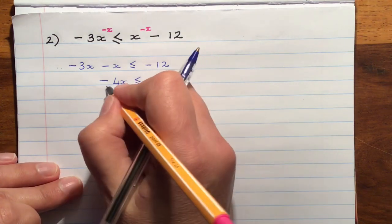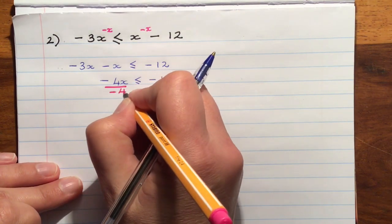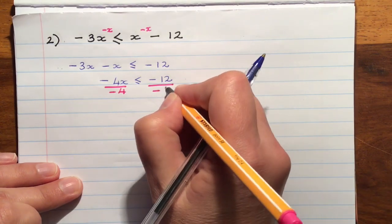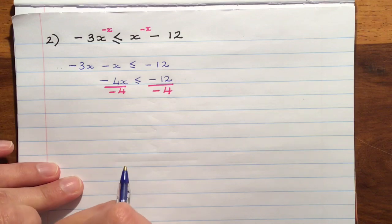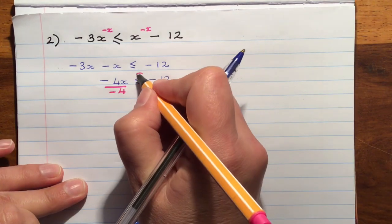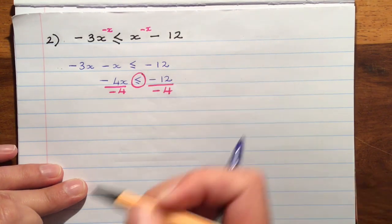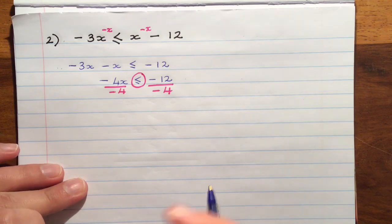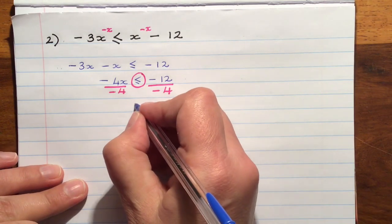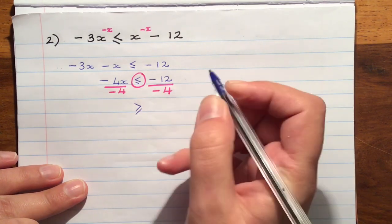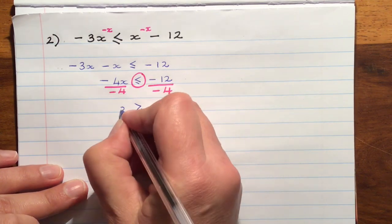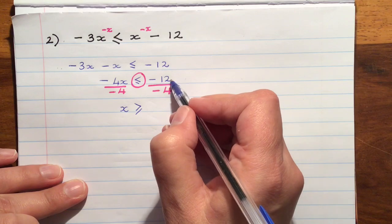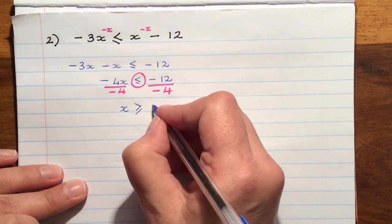Now we're going to divide both sides by negative 4. And because we are doing this, we need to watch out. We are going to have to change the direction of our inequality signs. On the next line it's going to have to face the other way. Negative 4x divided by negative 4 is x and negative 12 divided by negative 4 is 3.